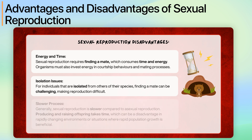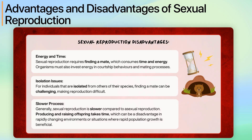Furthermore, sexual reproduction is generally slower compared to asexual reproduction. Producing and raising offspring takes time, which can be a disadvantage in rapidly changing environments or situations where rapid population growth is beneficial.